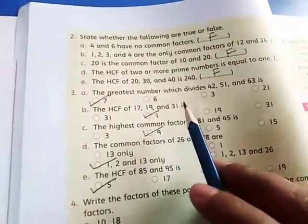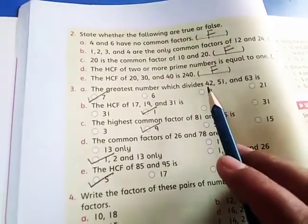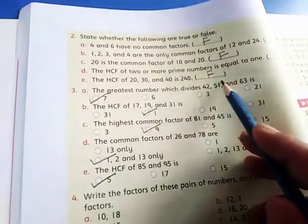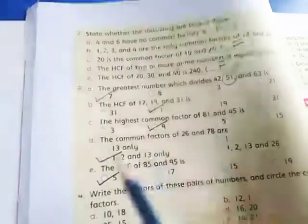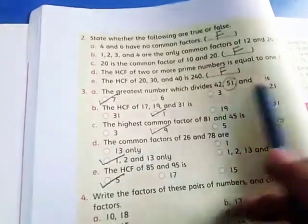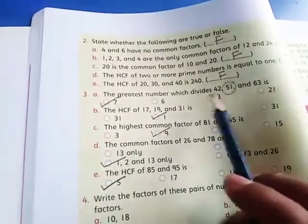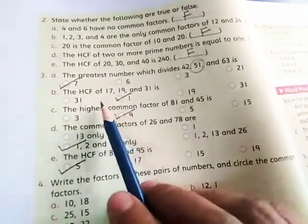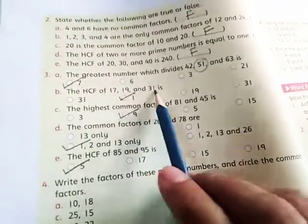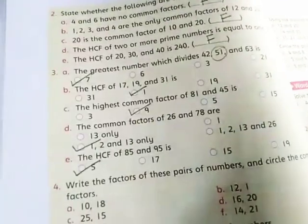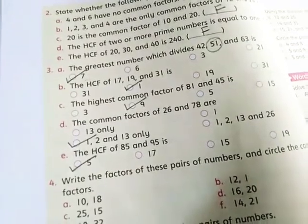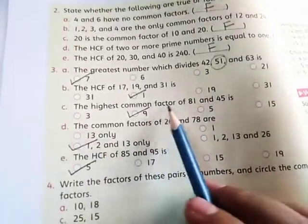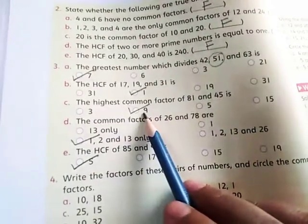Question number 3. The greatest number which divides 42, 51, and 63 is 7. But the greatest number which will divide these numbers is 7. The highest common factor of 17, 19, and 31 is obviously 1 because these are odd numbers. They can't be divided by another number. The highest common factor of 81 and 45 is 9.